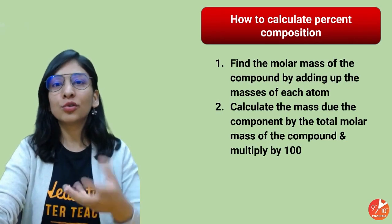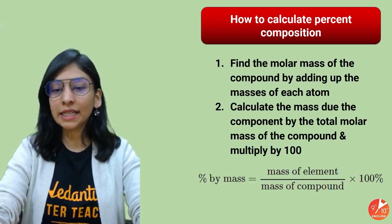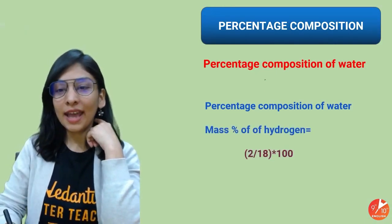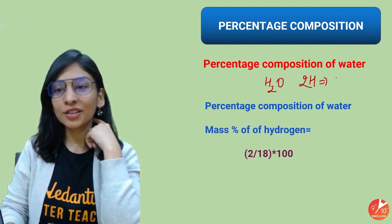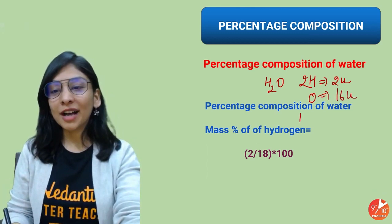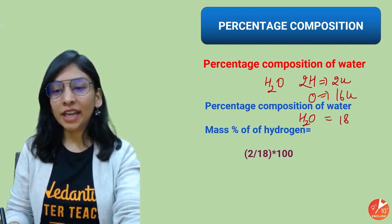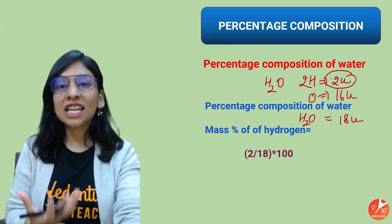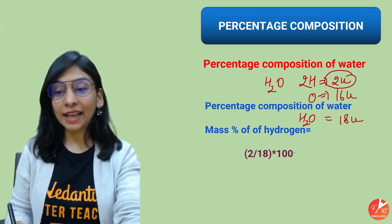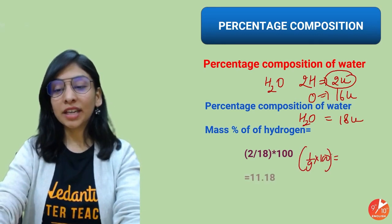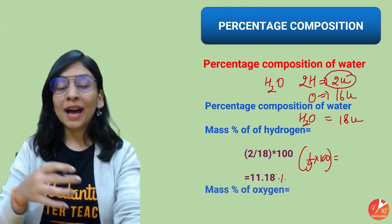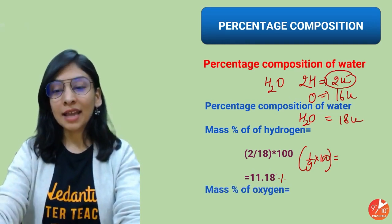Let's do it with an example. For water H₂O: we have 2 hydrogen atoms — mass 2U — and 1 oxygen atom — mass 16U. Molecular mass of H₂O is 18U. Mass percentage of hydrogen: 2 divided by 18 times 100 equals 100/9, which is 11.18%. So hydrogen is 11.18% by mass in one molecule of water. For oxygen: 16 divided by 18 times 100 gives 800/9. Alternatively, 100 minus 11.18 gives the mass percentage of oxygen directly.